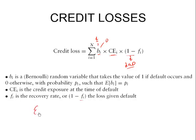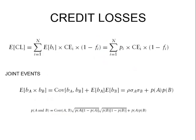To compute the expected credit loss, the Bernoulli default variable is replaced by the probability of default. Expected credit loss is calculated as: probability of default multiplied by exposure at default multiplied by loss given default. For the whole portfolio, we calculate the probability of default, exposure, and loss given default for each instrument, sum them all up, and that gives us the expected credit loss.